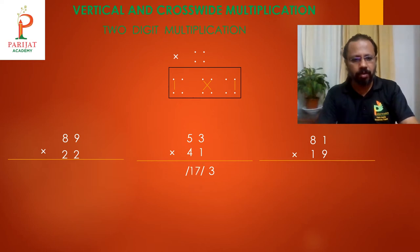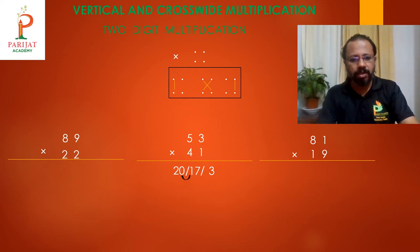For the first column, 5 times 4 is 20. So we have: 3 stays as is, 7 stays as is, but 1 carries over, making 20 become 21. The answer is 2173.